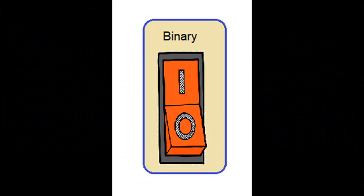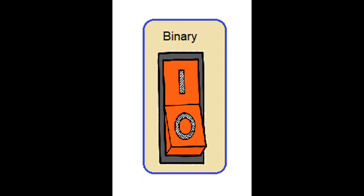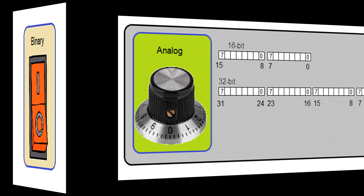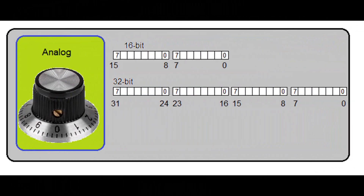For the input point types, the SCADA term binary and the DNP term binary input are the same. Binary inputs are each one bit. DNP3 also supports a two-bit binary input point, but those are outside the scope of this class as they are not part of the subsets.